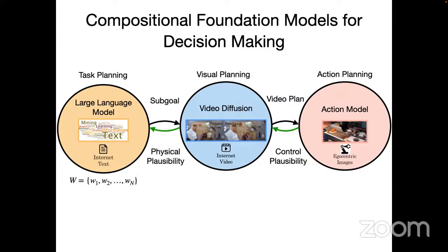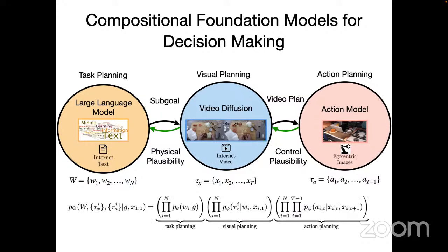Let's say we have a trajectory with sub-goals w1...wm, a video trajectory tau_X, and an action trajectory tau. Given a labeled trajectory with sub-goals and corresponding video for each sub-goal, we can write the trajectory probability under our model where P_theta refers to the LLM, P_phi to the video diffusion, and P_psi to action planning. We optimize using maximum log likelihood. Technically, each model can be optimized separately, then iterative refinement at test time ensures consistency.